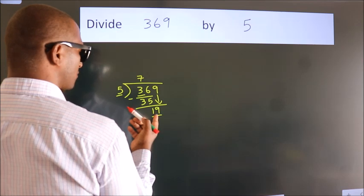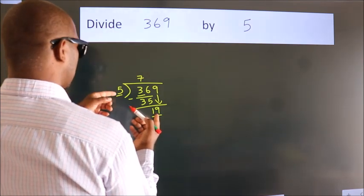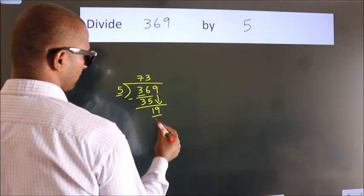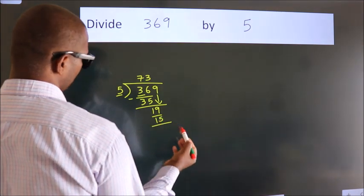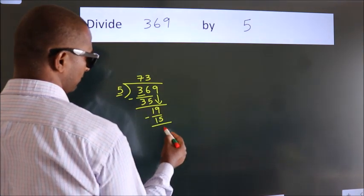A number close to 19 in the 5 table is 5 times 3 equals 15. Now we subtract and get 4.